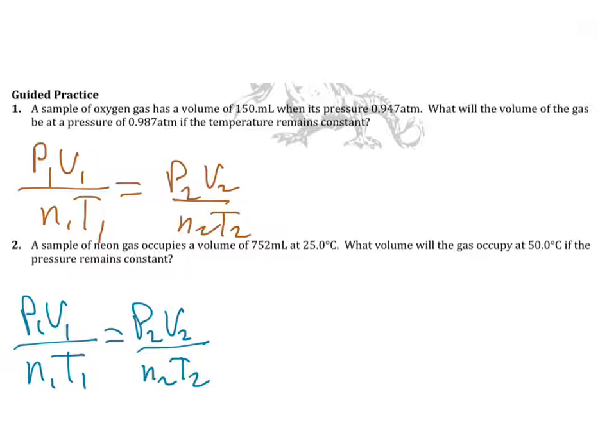What's nice about this equation is that if you are not given one of the variables, you can cross out that variable. Or if it says that something is remaining constant, you can cross that out as well. Let's go ahead and get started.